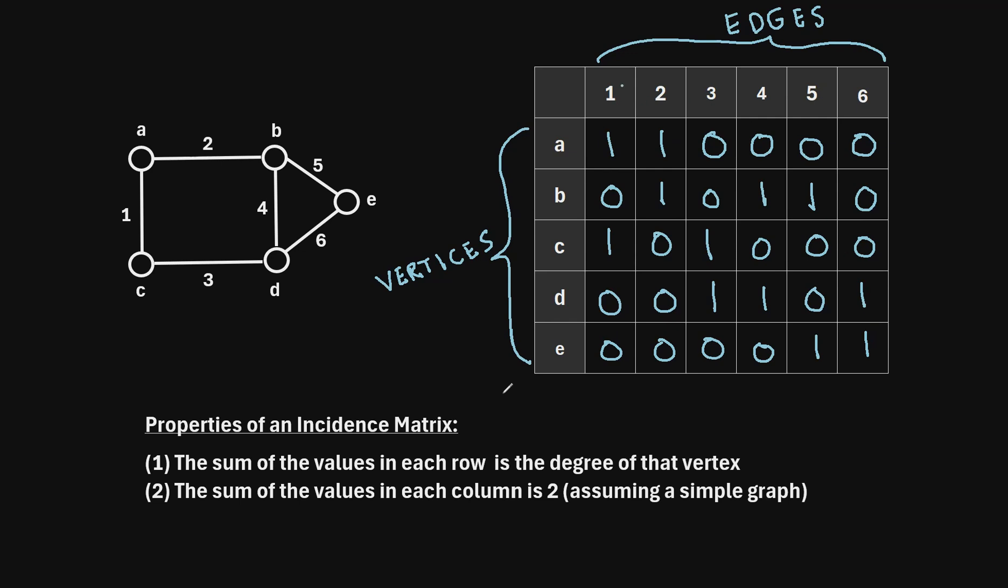And the reason for that is because, remember, a column just represents an edge. So for example, this first column represents edge 1. So when we have edge number 1 right here in the graph, it's only possible that it has two endpoints or two vertices that it's incident with. So it must have a sum of 2.